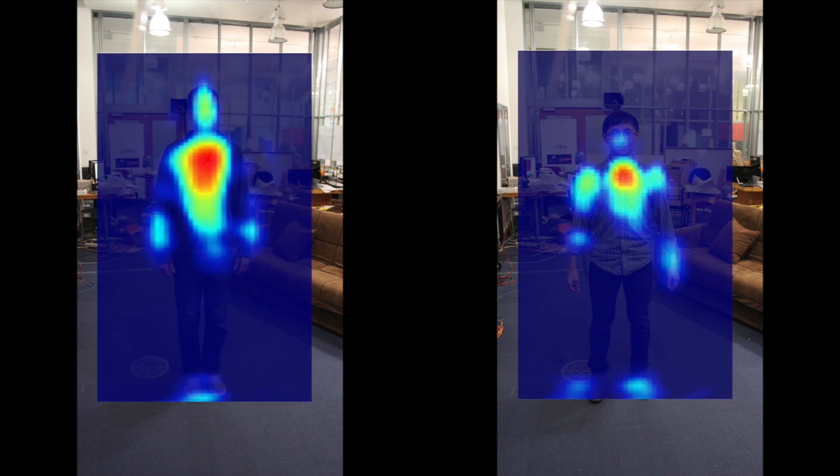The device can distinguish between different people behind the wall. So for example, over here, we ask two different people to stand behind the wall. And this is the output of our device.